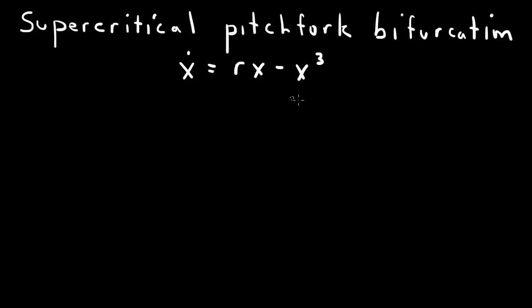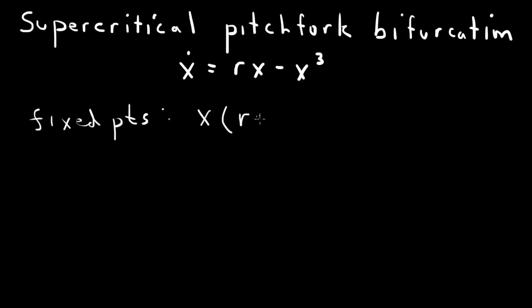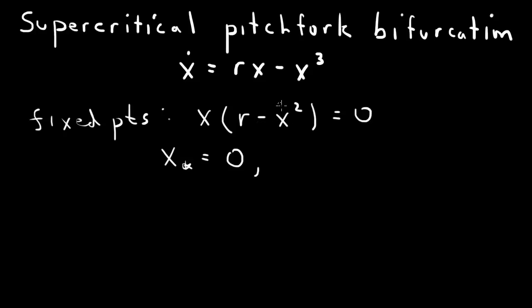Let's see how this bifurcation works by looking first at the fixed points. The right hand side equals 0, so we can factor out the x, giving x times (r minus x squared) equals 0. So one fixed point is x equals 0, or r minus x squared equals 0, which gives x squared equals r.